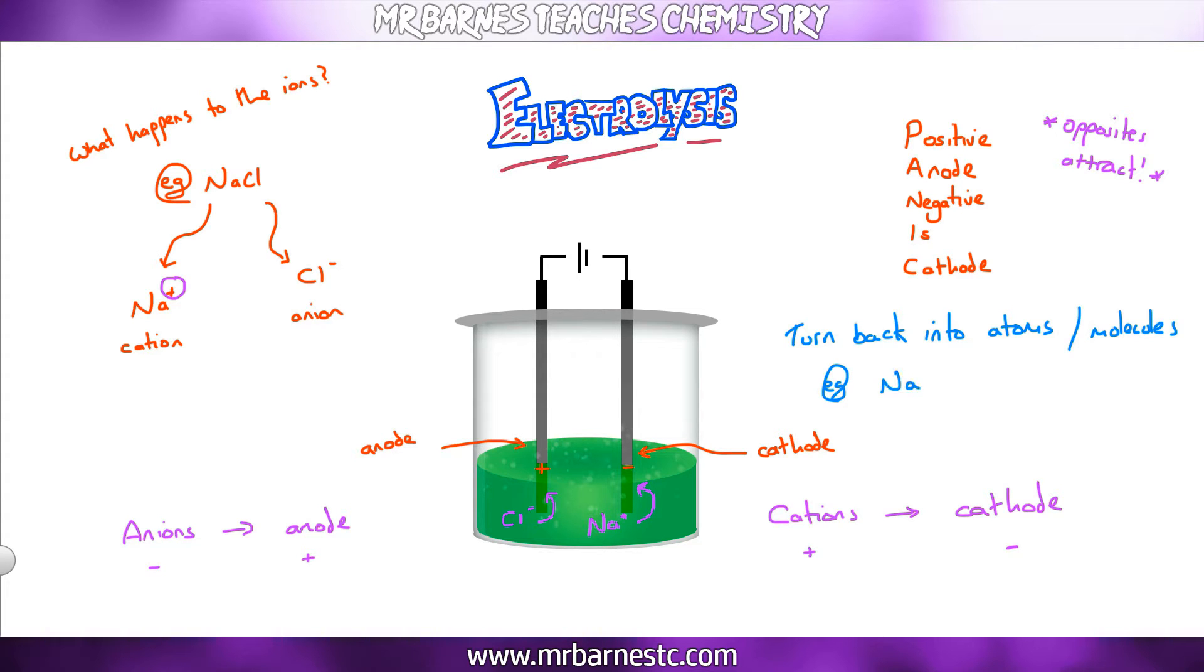When they get to those electrodes, they will turn back into their atoms or molecules. If they're metals, it'll go from sodium ion to sodium metal. If it's chlorine, it'll turn back into a diatomic molecule, so Cl- will go to Cl2. Everything in group 7 is diatomic.